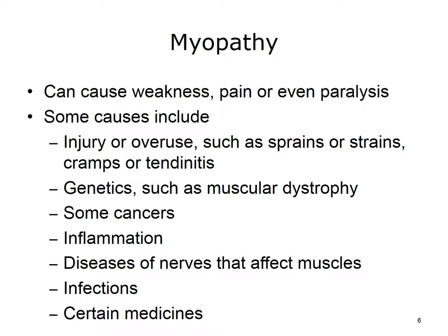Muscle disorders are also referred to as myopathies. Remember that myo means muscle and pathy means disease. There are many problems that can affect the muscles. Muscle disorders can cause weakness, pain, or even paralysis. Common causes of myopathy include injury or overuse such as sprains or strains, cramps or tendonitis, genetics such as muscular dystrophy, some cancers, inflammation such as myositis, diseases of nerves that affect muscles, infections, and certain medicines. Treatments for myopathies depend on the disease or condition and specific causes.